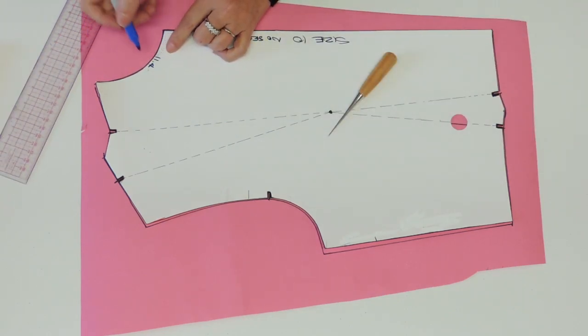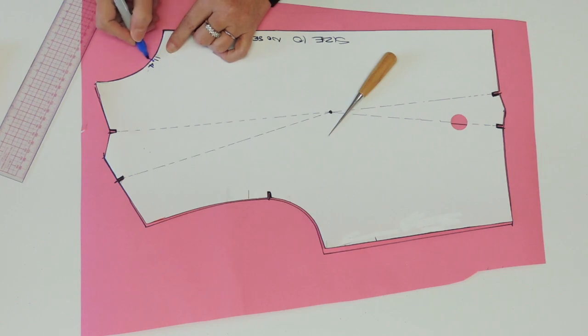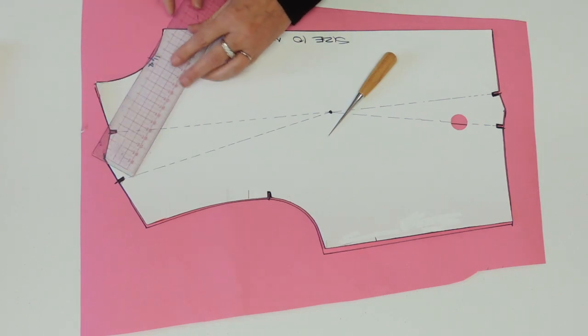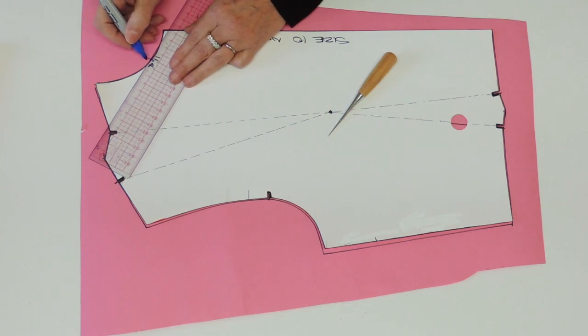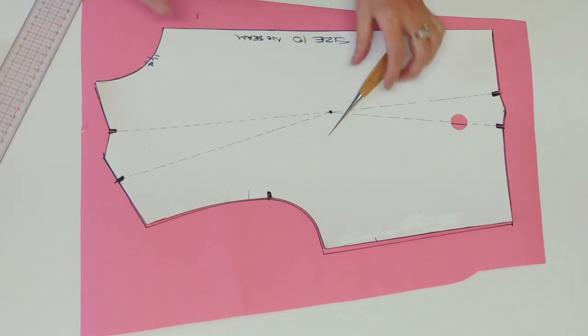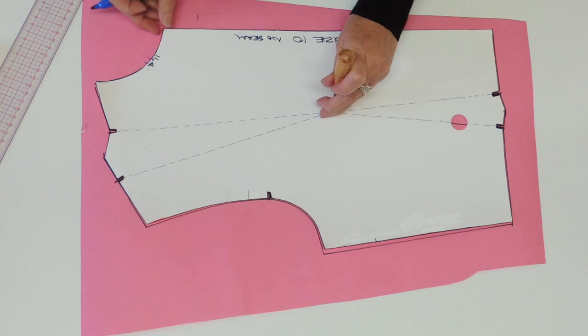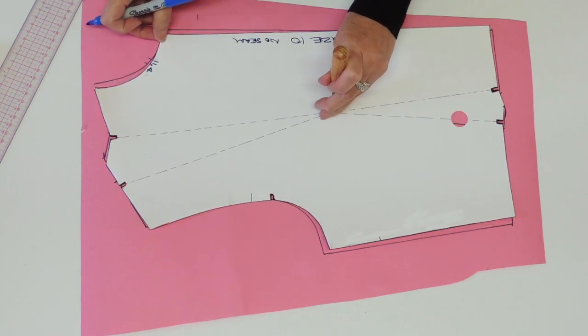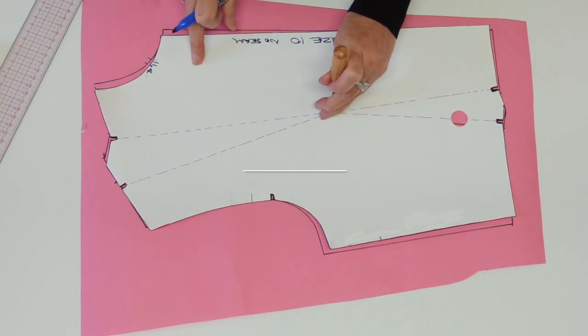So at the neck area, just find a place maybe at the first third from the center front. And you're going to measure five to seven millimeters. And you're going to hold your pivot and open the neck about five to seven like I just said.